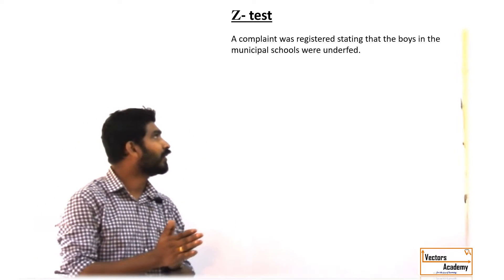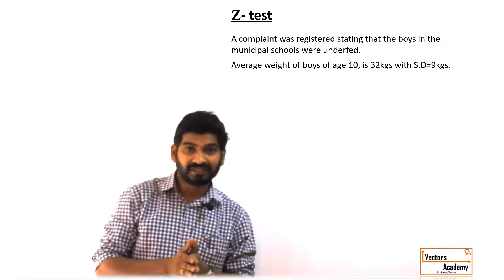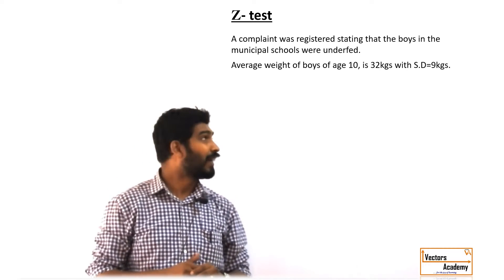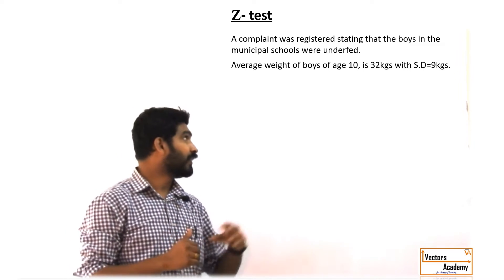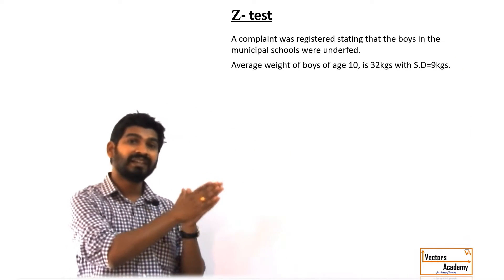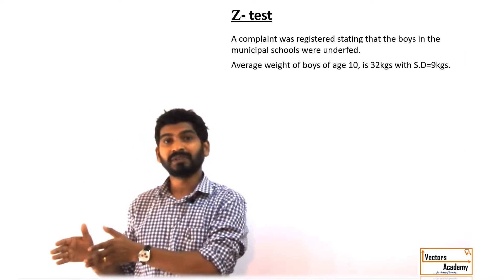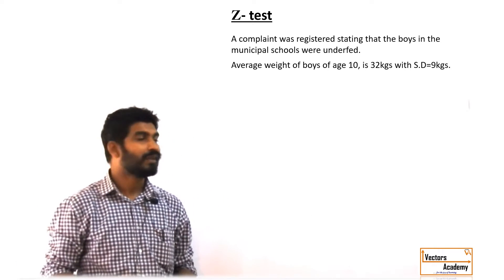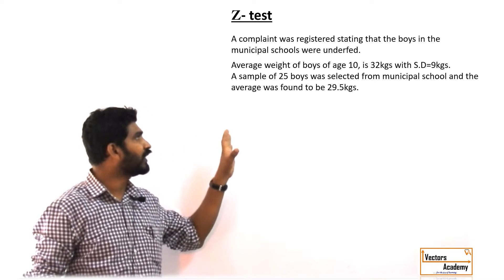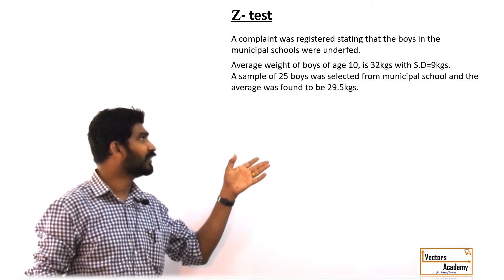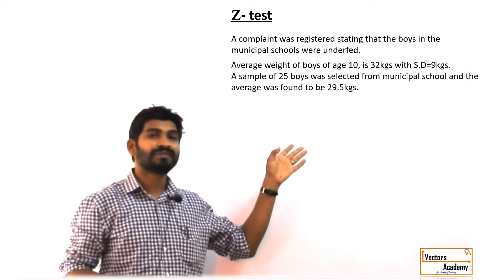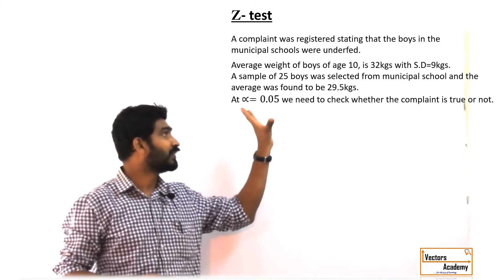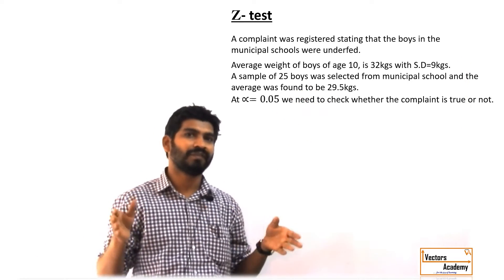The weights of the students can be considered as our variable. By statistical data we know that boys who are 10 years old have an average weight of 32 kgs, and the standard deviation is 9. This data can be used to find out whether the boys of the municipal school are underweight, overweight, or having the average weight as the population. Around 25 students were picked up from the municipal school whose age is 10 years, and their average weight is found to be 29.5. At a 0.05 significance level we have to check whether these boys are closer to the mean population or far away from it.